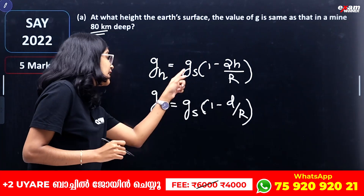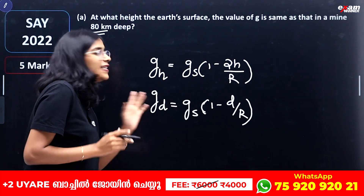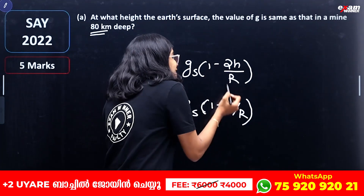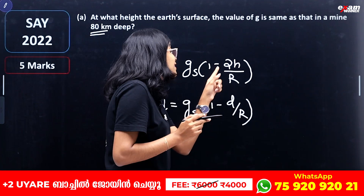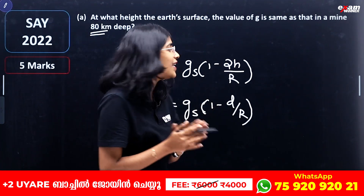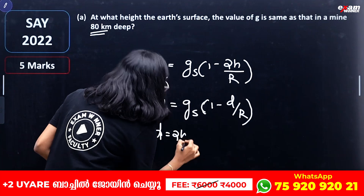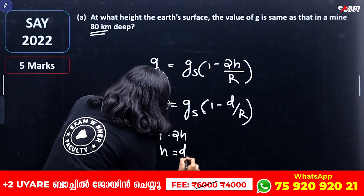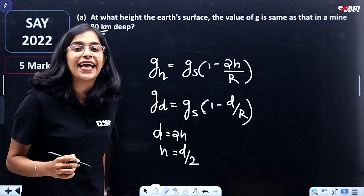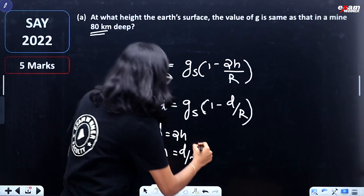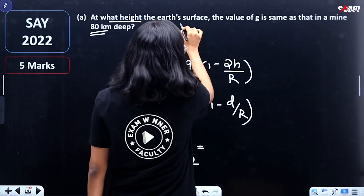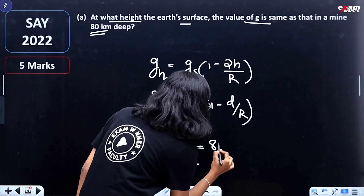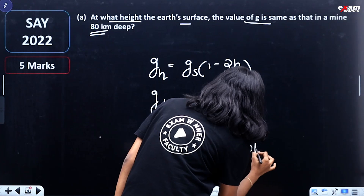If g at height H equals g at surface, and g at surface equals g at depth: g_H = g_S × (1 − 2H/R) and g_D = g_S × (1 − D/R). Cancelling g_S from both sides, we get 2H = D. So H = D/2. That is 80 divided by 2, which gives us 40 km.